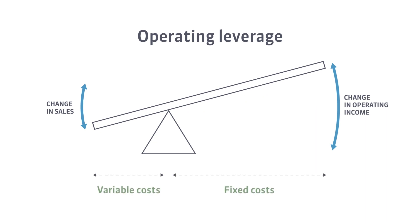Fixed costs were used here as leverage to increase operating income. Companies that lower variable costs by increasing the proportion of fixed costs use operating leverage, which along with an increase in sales allows them to achieve a much higher operating income than companies with a lower proportion of fixed costs.